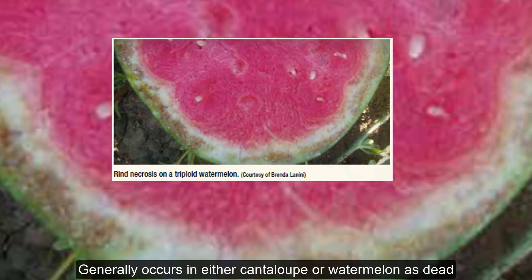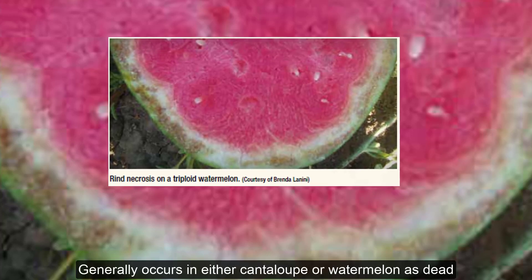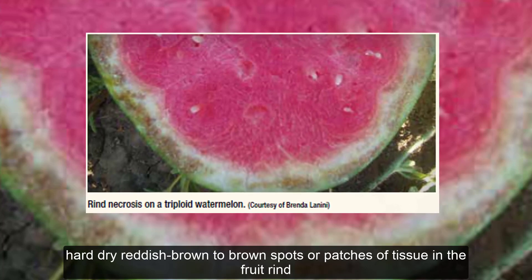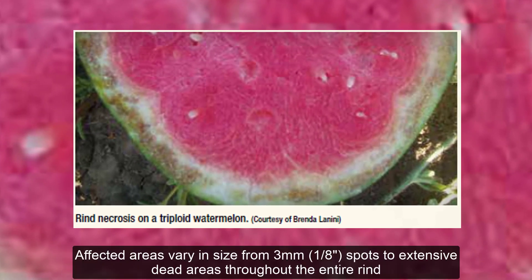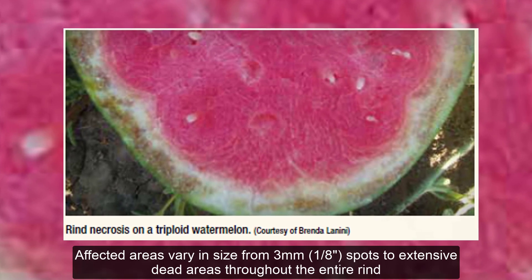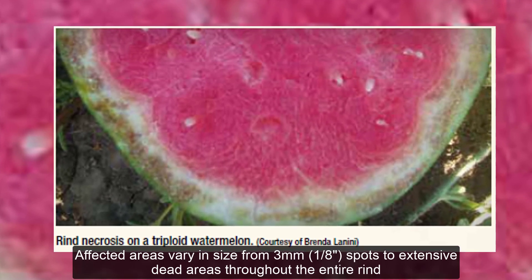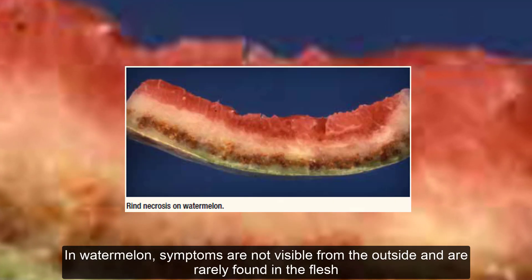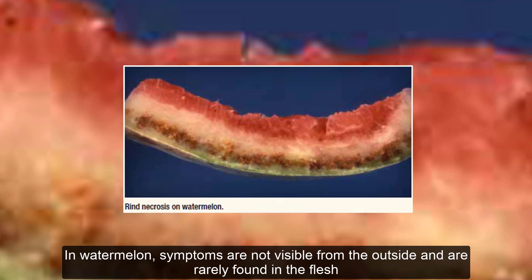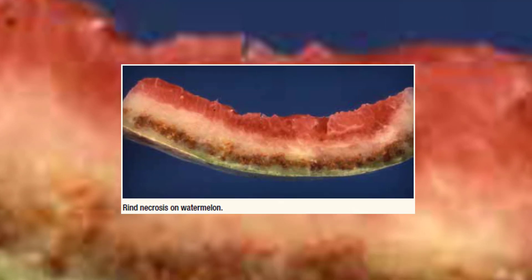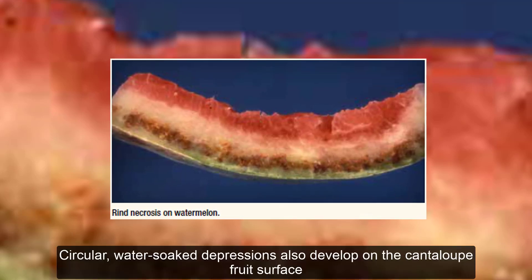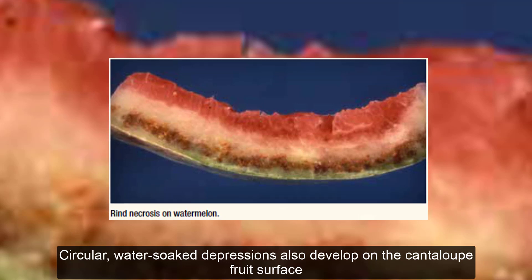Rind necrosis generally occurs in cantaloupe or watermelon as dead, hard, dry reddish-brown to brown spots or patches of tissue in the fruit. Affected areas vary in size from 3 mm (1/8 inch) spots to extensive dead areas throughout the entire rind. In watermelon, symptoms are not visible from the outside and are rarely found in the flesh. In cantaloupe, dead tissue may extend into the flesh of the fruit; circular, water-soaked depressions also develop on the cantaloupe fruit surface. Sunscald: papery white areas develop on fruit.